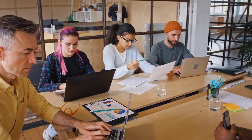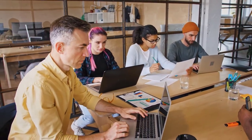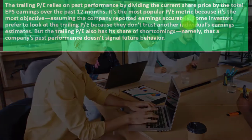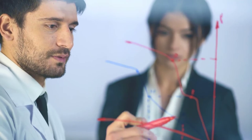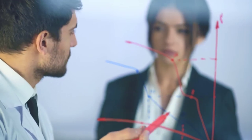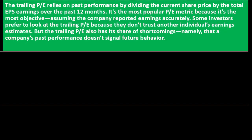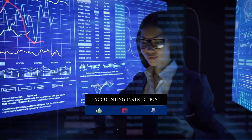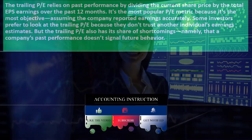Past earnings are reliable for their time frame — they reflect what actually happened. Some investors prefer the trailing PE because they don't trust another individual's earnings estimate; they'd rather look at what happened in the past with more confidence. However, the trailing PE also has shortcomings: a company's past performance doesn't signal future behavior. If things are changing rapidly, past performance may not reflect what's coming — there could be substantial changes whose effects nobody knows until the future becomes the present.